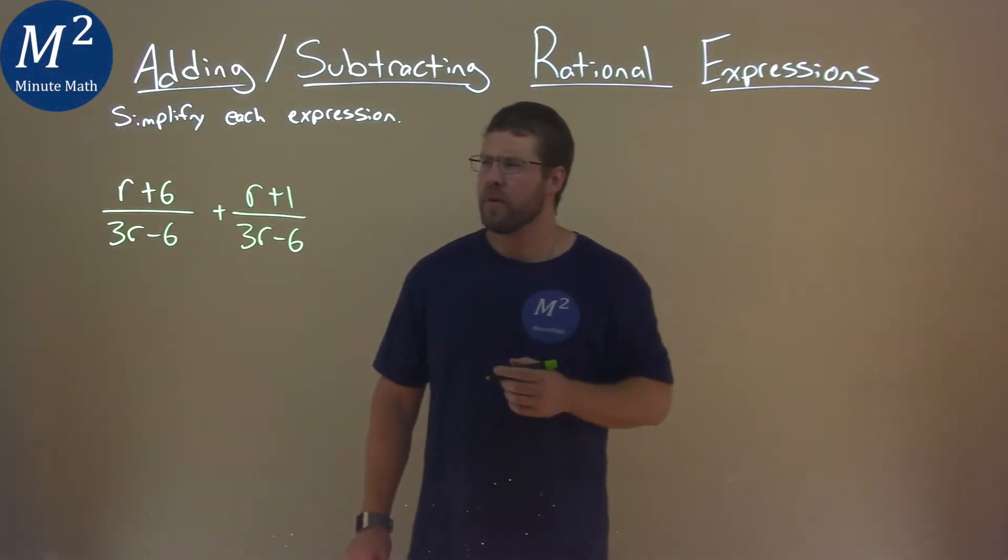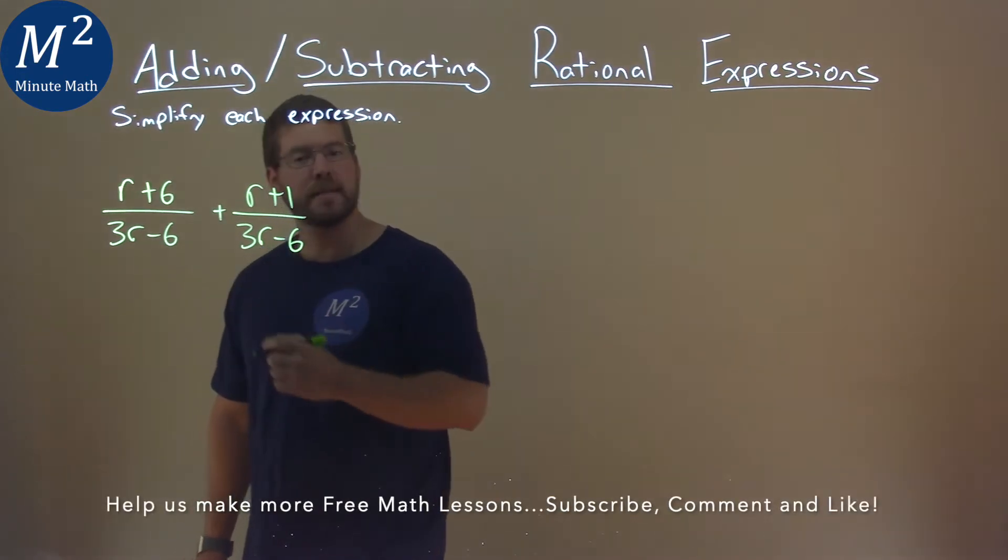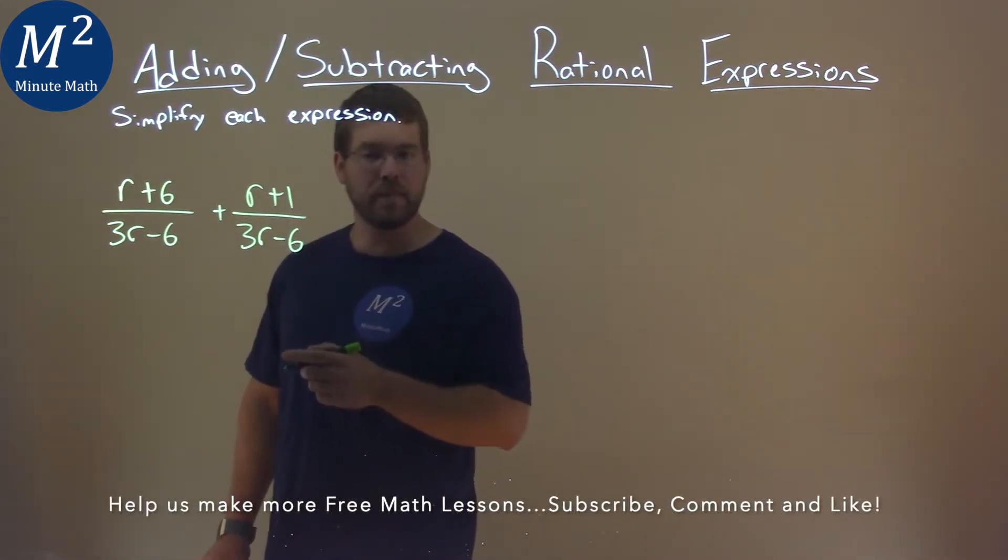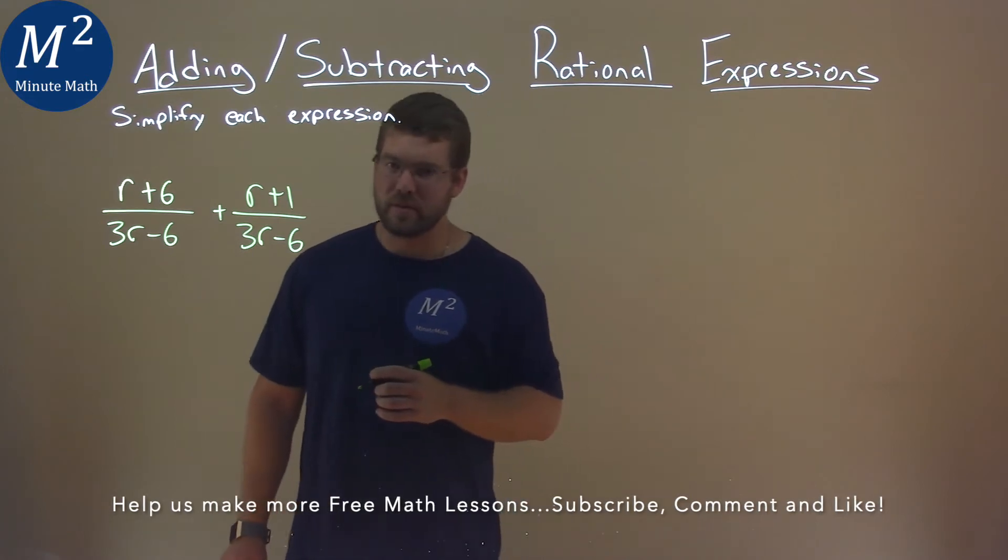We're given this problem right here. r plus 6 over 3r minus 6 plus r plus 1 over 3r minus 6. We have to simplify this expression.